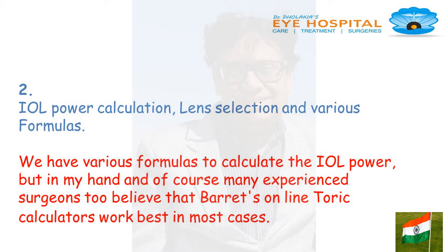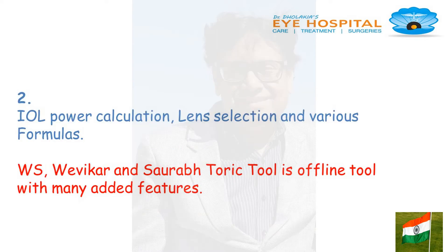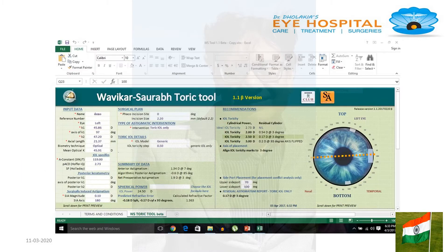Criteria 6: We have various formulas to calculate the IOL power. In my experience, and of course many experienced surgeons believe, that Barrett's online toric calculator works best in most cases. This is how Barrett's online toric calculator looks like. The WS Webicar and Saurabh Toric Tool is an offline tool with many added features, and this is what the WS tool looks like.